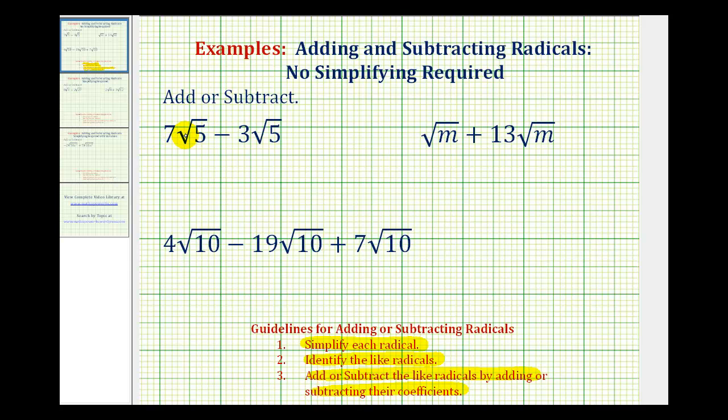So again, for 7√5 minus 3√5, it's important that we first recognize the square root of 5 does not simplify because it does not contain any perfect square factors.